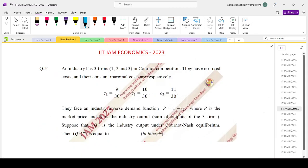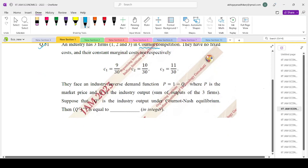Now let us come to question number 51 of the IIT Jam 2023 question paper. An industry has three firms 1, 2, and 3 in Cournot competition. They have no fixed cost and their marginal costs are respectively 9 by 30, 10 by 30, and 11 by 30. They face the industry inverse demand curve P equals 1 minus Q. P is the market price, Q is the industry output, which is sum of outputs. Suppose that QC is the industry output under Cournot Nash equilibrium, then QC inverse is how much?